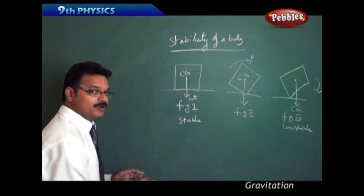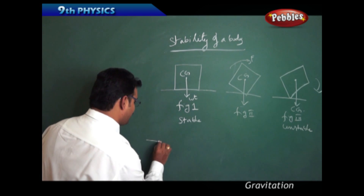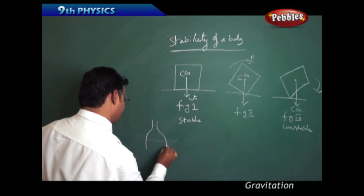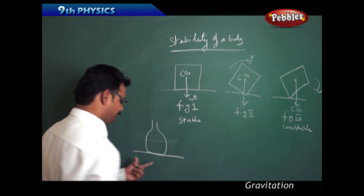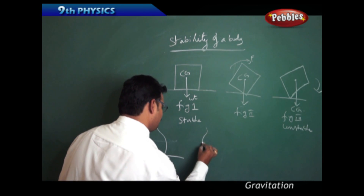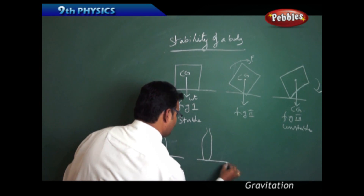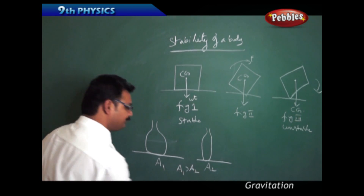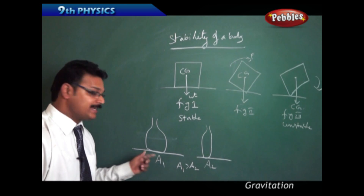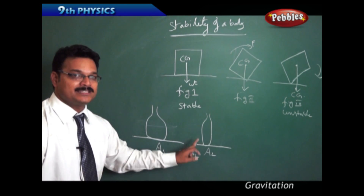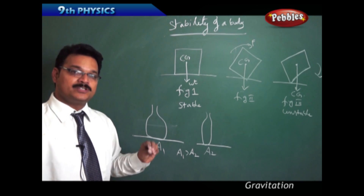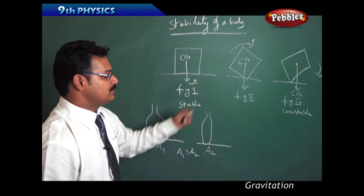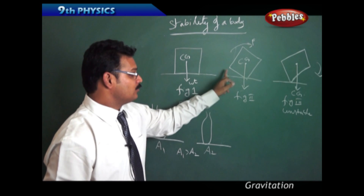To make a body stable, two points are important. First, the area of contact should be larger — a larger area of contact like A1 gives more stability, while a smaller area like A2 gives less stability. Second, the centre of gravity line should pass through the base of the body. If it goes beyond the base, the body will be unstable.